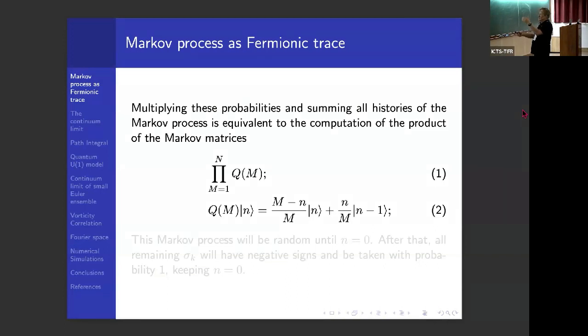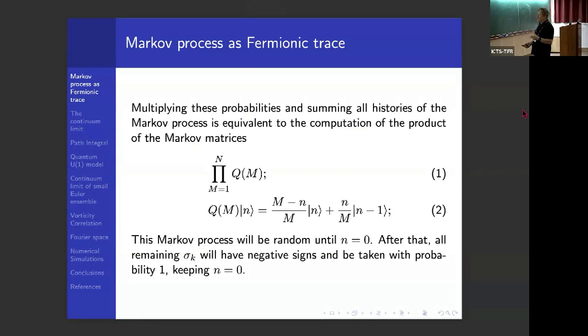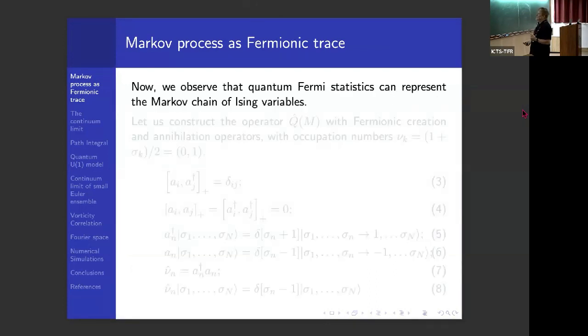And M is always diminishing, and you have a product of matrices. When you multiply these matrices, you get 2 to the N terms corresponding to these two alternatives in each matrix. So the Markov process will be random until N becomes zero. When there will be no more positive spins left, all the remaining spins will be negative, and we'll pick them with probability one. Or vice versa, of course. If there will be all the remaining spins will be positive, then again, they will be positive with probability one.